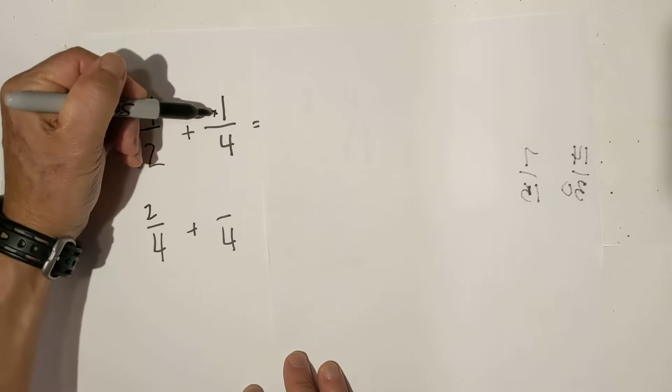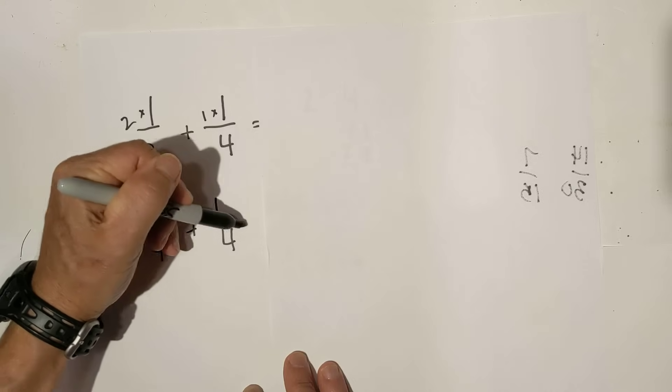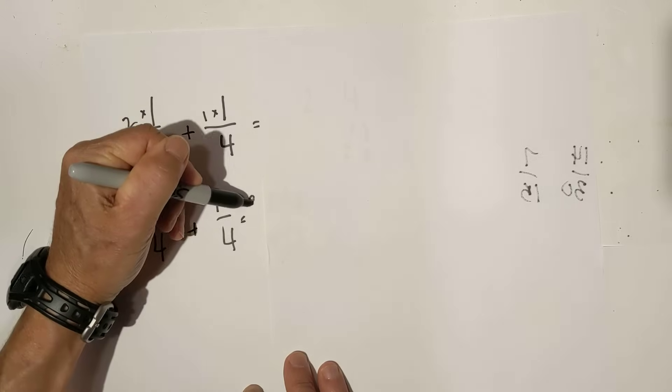Four goes into four one times, one times one is one, and then just add two plus one is three.